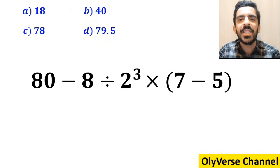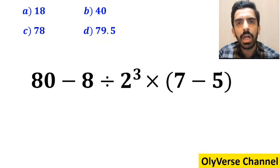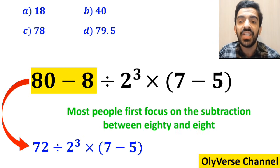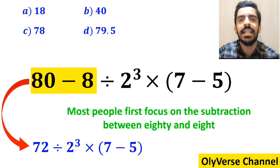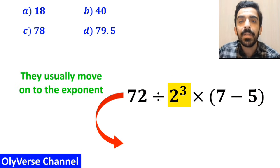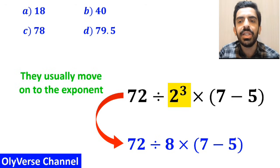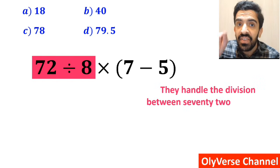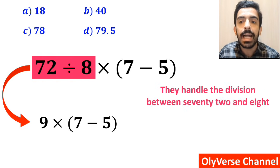Let's go through this question step by step and solve it together. Most people first focus on the subtraction between 80 and 8 and rewrite the whole expression as 72 divided by 2 to the power of 3 multiplied by 7 minus 5 inside the parenthesis. In the next step, they usually move on to the exponent and rewrite this as 72 divided by 8 multiplied by 7 minus 5 inside the parenthesis.